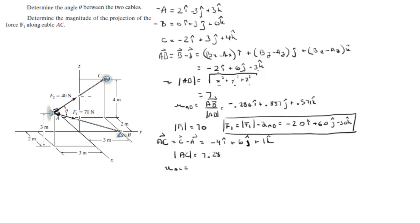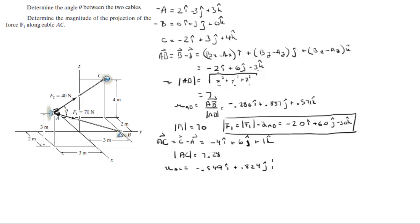With these values we can find the unit vector acting along AC. A unit vector is a vector with a magnitude of 1 acting along AC, and it comes out to be negative 0.549i plus 0.824j plus 0.137k.